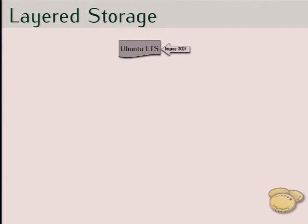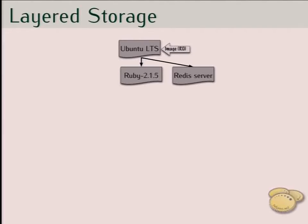At the beginning we have an image — just a base root file system of Ubuntu LTS. It is read-only; once written, you cannot change it. It is stable. To prepare a containerized application, we create two child images: one is the Redis server — the arrow means inheritance, meaning only the difference is remembered, one image built on top of another. One image has the Redis server; another hosts the Ruby language runtime. And from the Ruby image we make another child image with the Rails application.